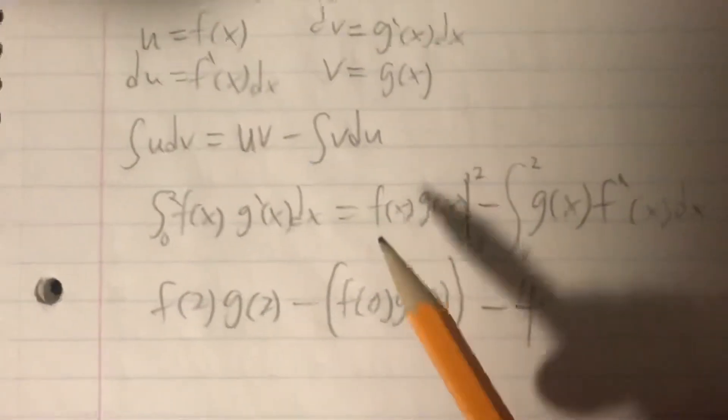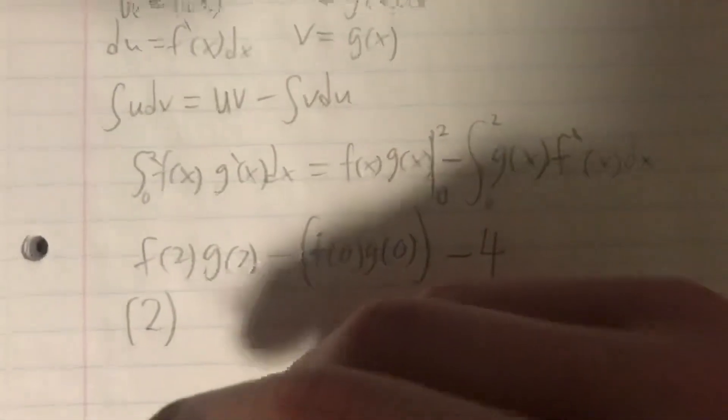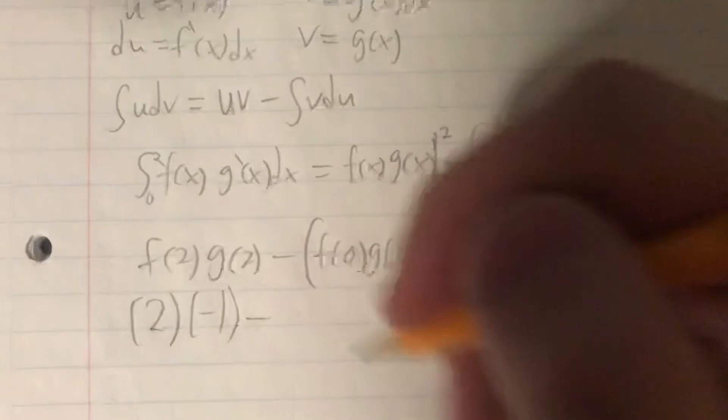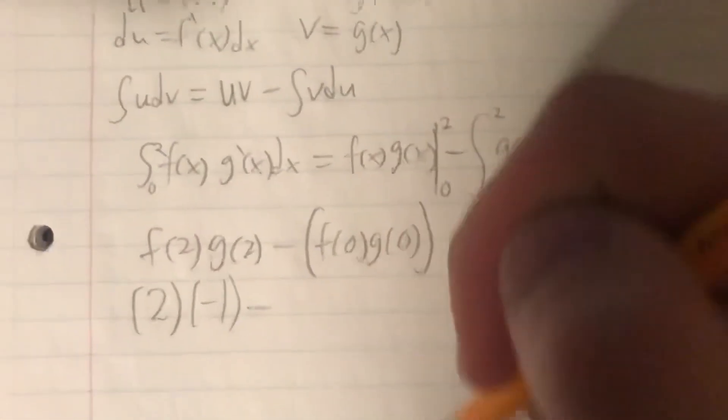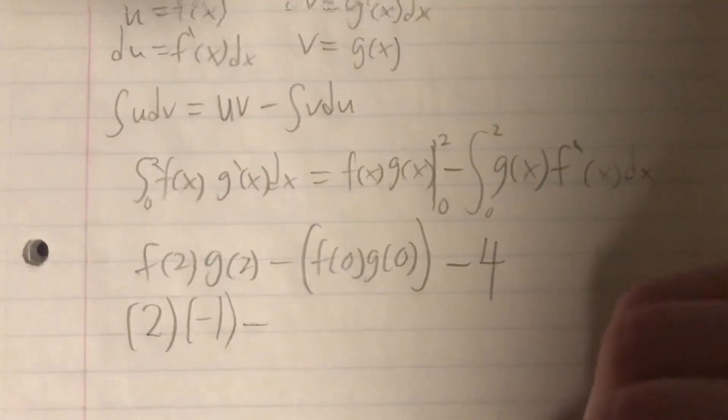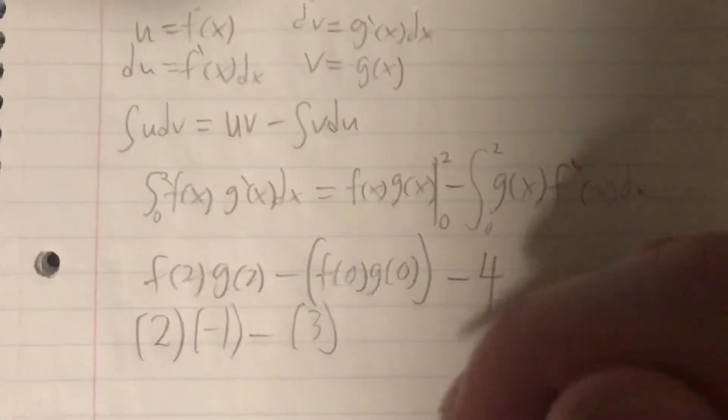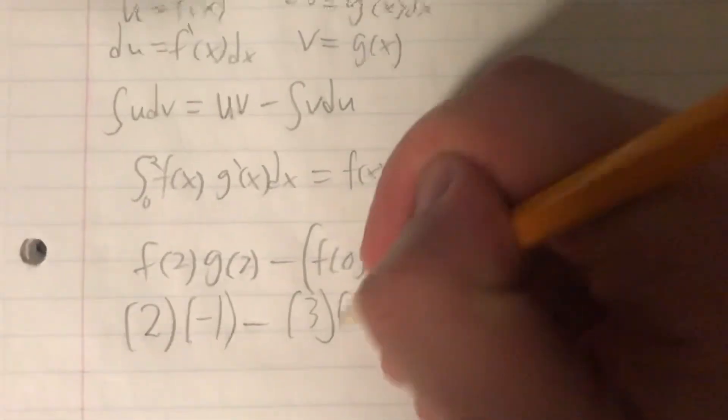So, that'll be f of 2, which is 2, times g of 2, which is negative 1, minus, then the contents of this. So, f of 0, which is 3, times g of 0, which is 1.